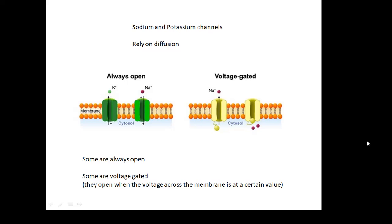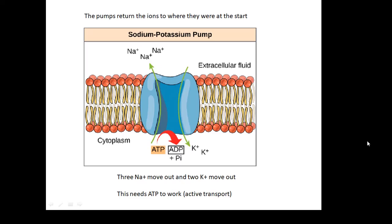If the voltage reaches a certain value, then the voltage-gated channels open and lots of ions move through them. Then this pump returns the ions to where they were at the start. To do that requires energy — the pump needs ATP to work. This process is called active transport because it's working against diffusion, so it requires energy. The pumps move the ions back — the sodium ions out of the axon and the potassium ions into the axon.